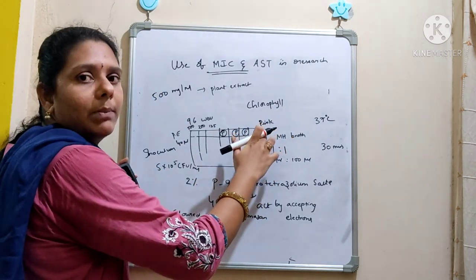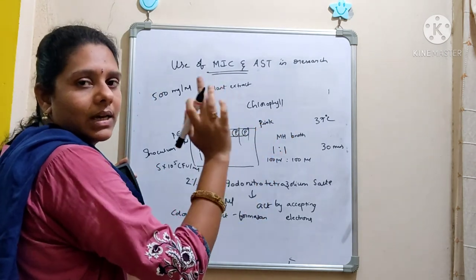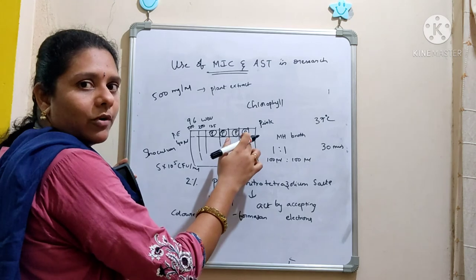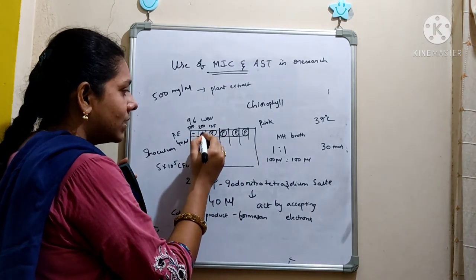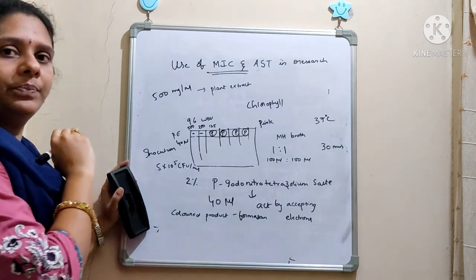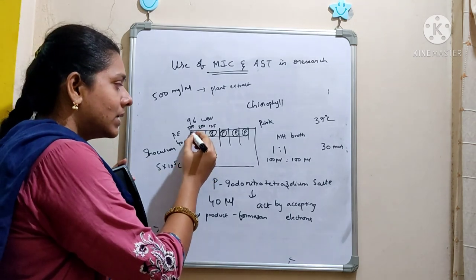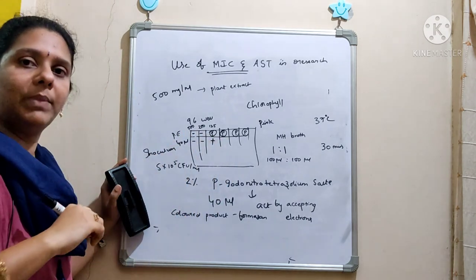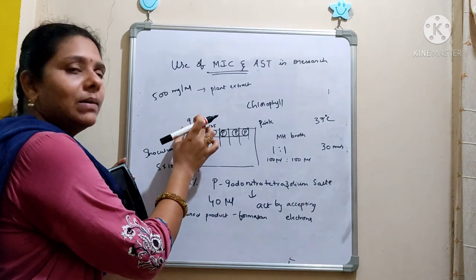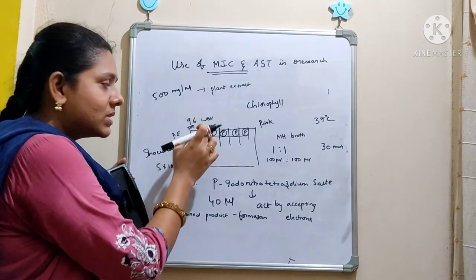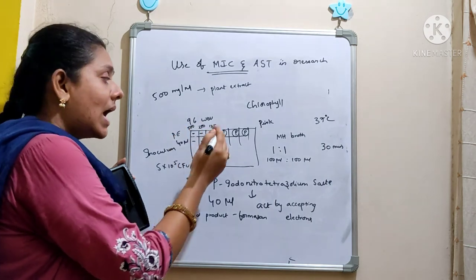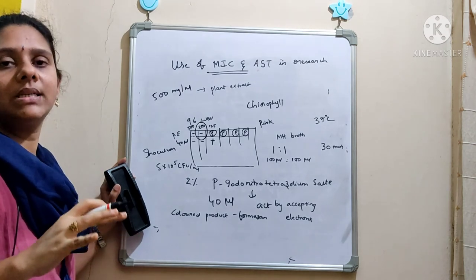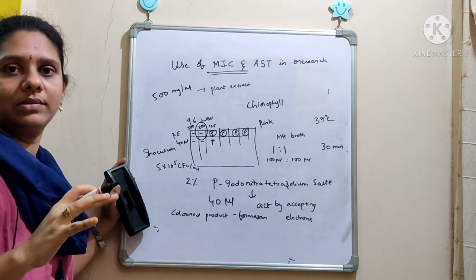For example, if you can see pink color formation in most wells, but at concentrations of 500 mg/ml and 250 mg/ml there is no pink color, that clearly indicates no bacteria survived there. So there is a presence of bacteria at lower concentrations and an absence at higher concentrations — because your antimicrobial compound isolated from the plant source is effective at those concentrations. The MIC value will therefore be reported as 250 mg/ml.